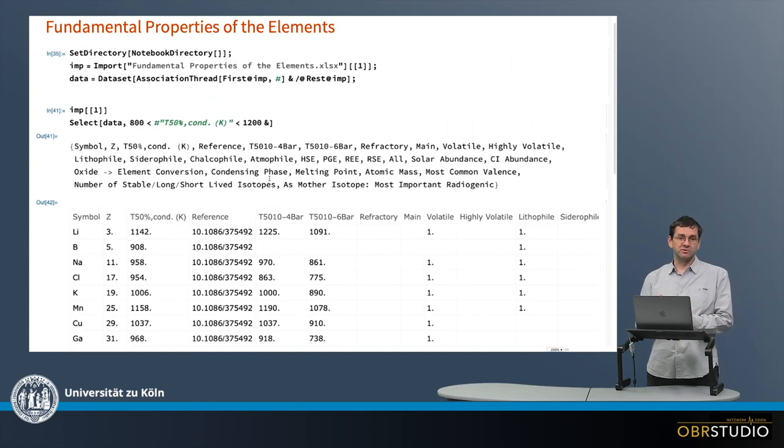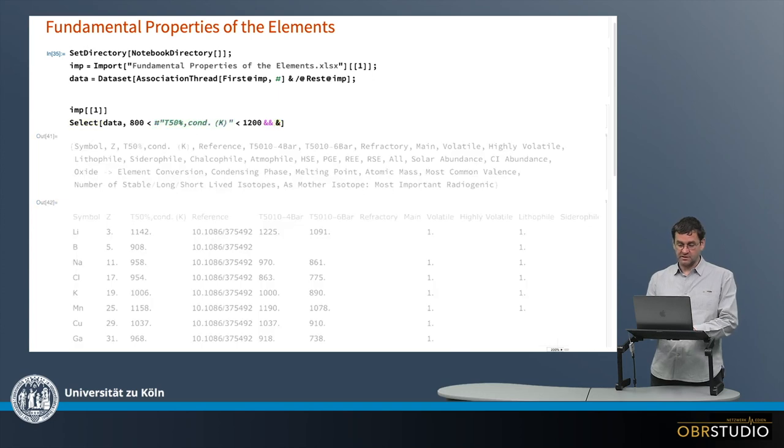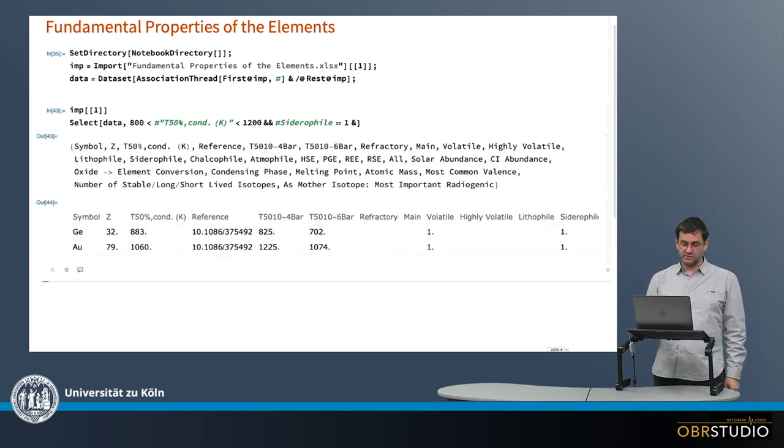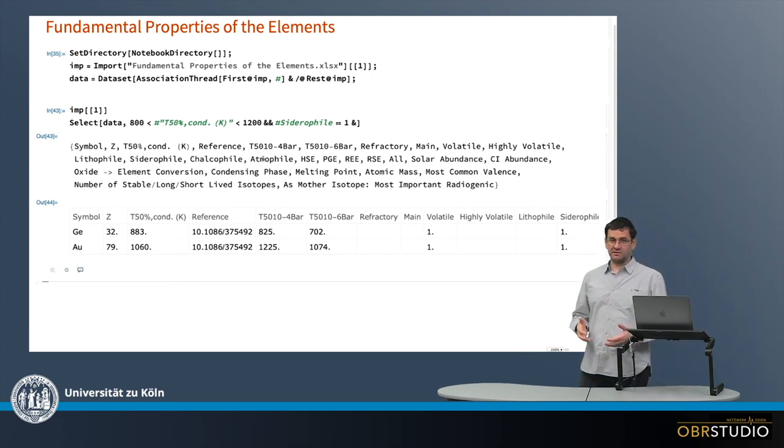And now I also want from this only the siderophile elements, so I can add here a new selection criteria. In this case, siderophile should be 1 because each time there is a 1, it means it's siderophile. I execute it again and now I only get the siderophile elements that condense in a certain temperature interval.